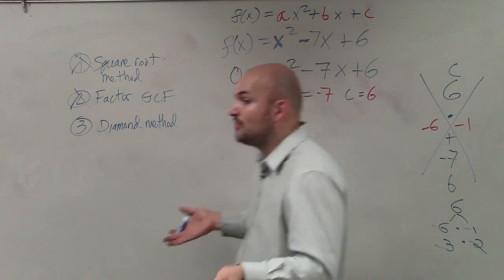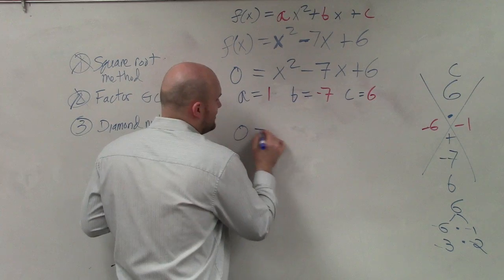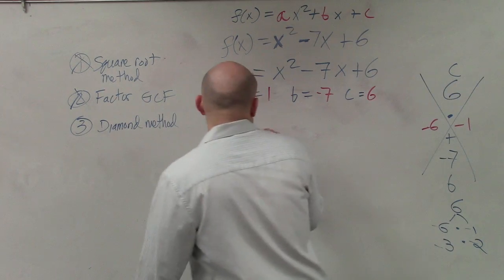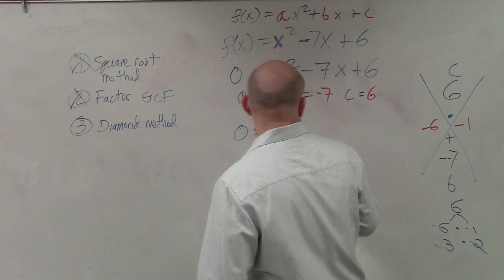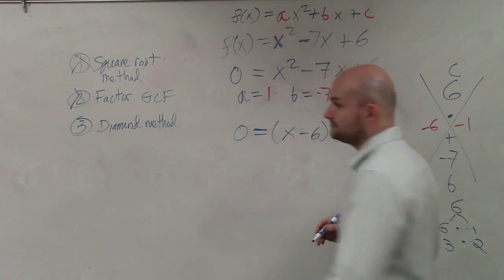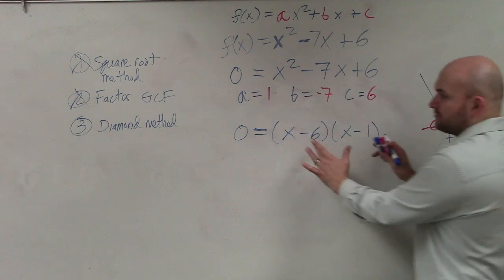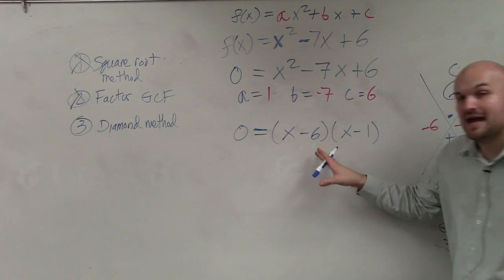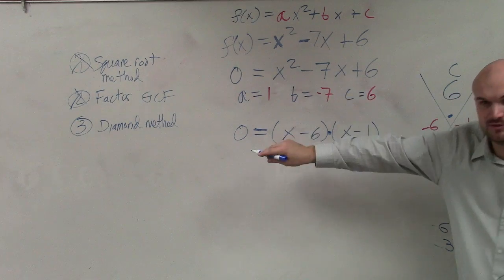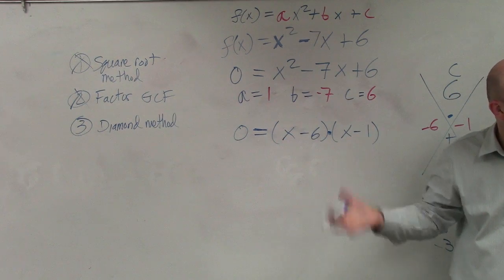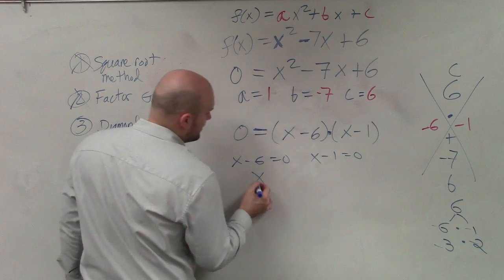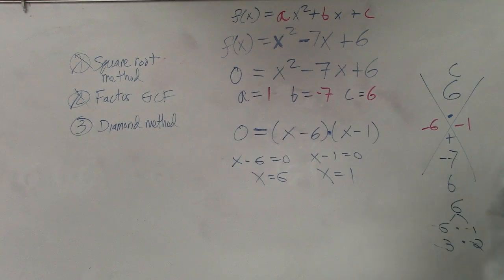Again, we still have not written our problem as a product yet. However, we have 0 equals. Now, basically what we're going to do is take each one of these factors and write them in as part of our binomials. So we have a binomial times another binomial. And now do we have a product that's equal to 0? Yes, and that's exactly what we want, is a product equal to 0. So we have x minus 6 equals 0, and x minus 1 equals 0. x equals 6, x equals 1. And that is your two answers.